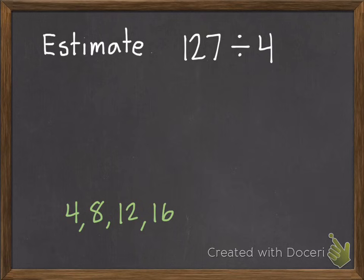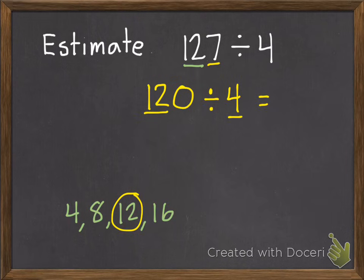So our compatible numbers are 4, 8, 12, 16. We want to find the one closest to 12, which there is a 12. So we're going to leave that 12. We need to put a zero. Divide it by 4, and that's going to equal 30.